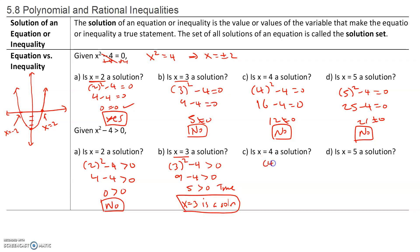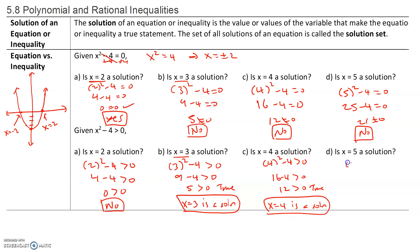What about 4? If we take 4 squared minus 4, that's 16 minus 4, which is 12. 12 is greater than 0 — that is a true statement. Therefore, x equals 4 is also a solution. What about 5? We take 5 squared minus 4. That's 25 minus 4, which is 21. 21 is greater than 0. Therefore, x equals 5 is a solution.